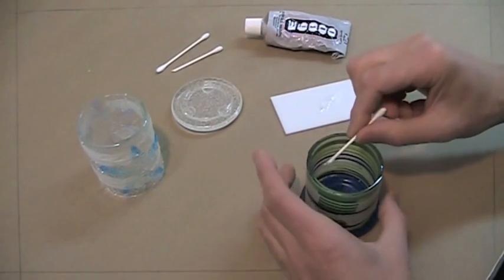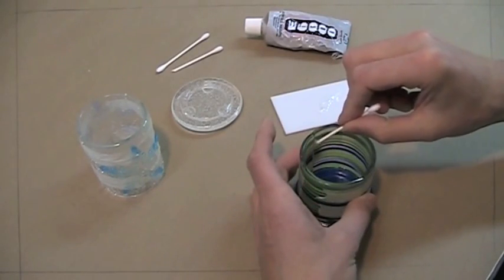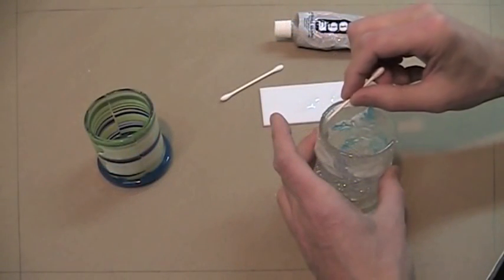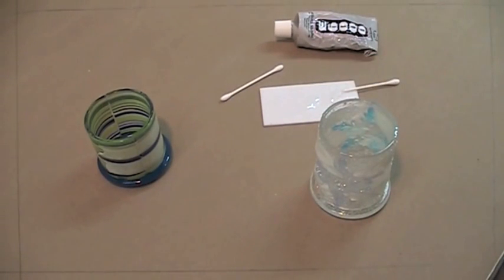For extra strength, apply a dab of adhesive to the top point where the panels meet. Repeat the process for the second votive. Make sure to allow enough time to let the adhesives thoroughly cure.